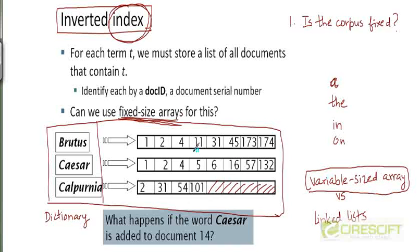Also, if we store entries in contiguous memory locations, we can exploit caching: when we retrieve a block from main memory, because of locality of reference, nearby entries are also brought into the cache. That means traversing the postings list is going to be pretty fast if we implement it using a variable-sized array. We also save space due to the lack of pointer overhead as in linked lists.